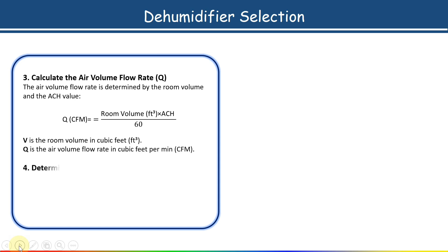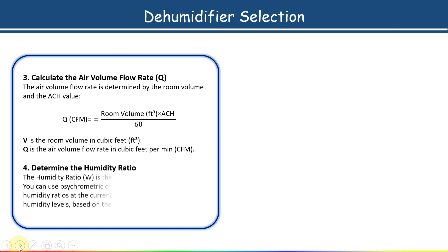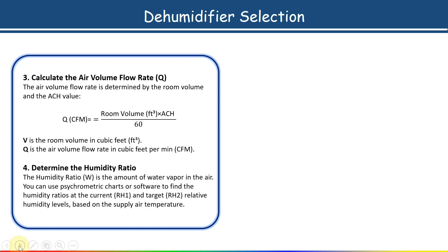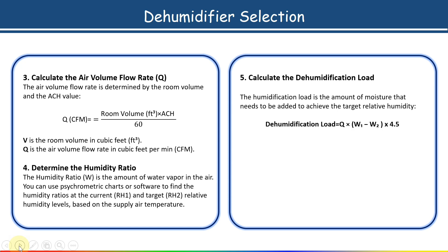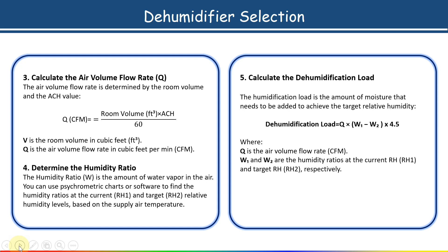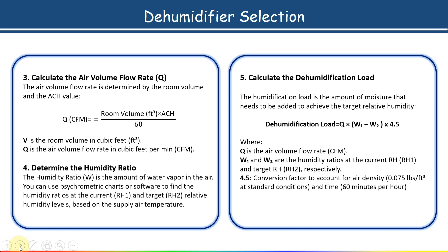Once you have the air volume flow rate, the next step is to determine the humidity ratio. Based on your current and target relative humidity levels, calculate the humidity ratio value from the psychrometric chart or from software. Then, to calculate the dehumidification load, the formula is: Dehumidification Load = Q × (W1 − W2) × 4.5, where Q is the air volume flow rate in CFM, W1 and W2 are the humidity ratios at the current and target relative humidity respectively, and 4.5 is the conversion factor to account for air density and time.